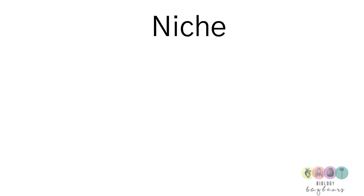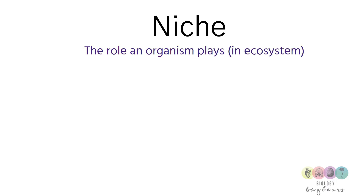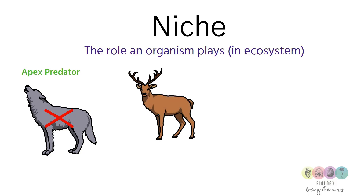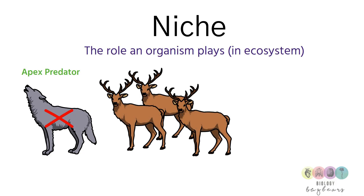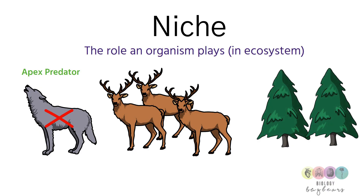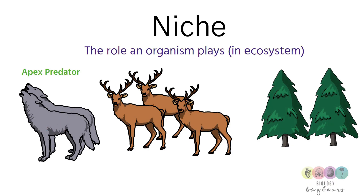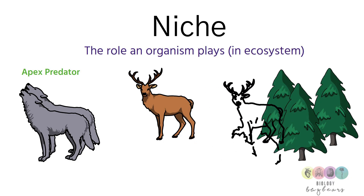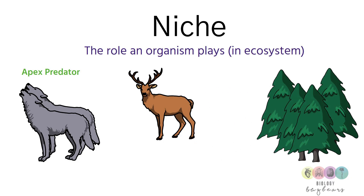Niche means the role an organism plays — like its job. A way of understanding the importance of niche is the wolves in Yellowstone Park. Historically, wolves were the apex predators until hunted to extinction. This caused the elk population to increase dramatically, which had a drastic impact on vegetation and biodiversity. When wolves were reintroduced, the elk population decreased and the vegetation and biodiversity recovered.